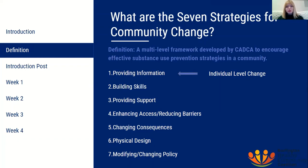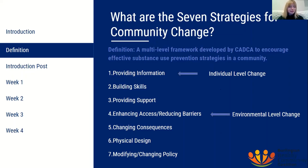These are all about encouraging behavior change at a personal level through resources like information, skills, and support. At the environmental level, we have those last four, which are enhancing access, reducing barriers, changing consequences, altering physical design, and modifying or changing policy. Since that's at the environmental level, that means that behavior change is encouraged by altering the environment around an individual.